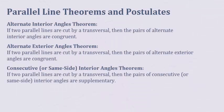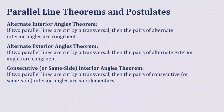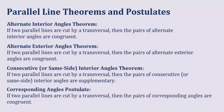So these three relationships, outside of the corresponding angles postulate, are all theorems which can be proven. They're called the alternate interior angles theorem, the alternate exterior angles theorem, and the consecutive, or same side, interior angles theorem.